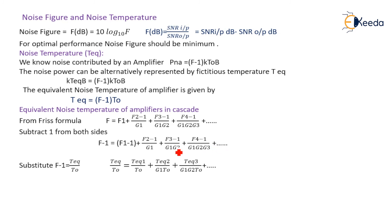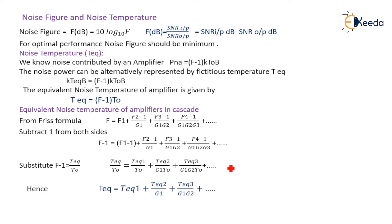Now substituting F − 1 = T_equivalent / T0, we get: T_equivalent / T0 = T_equivalent1 / T0 + T_equivalent2 / (G1 × T0) + T_equivalent3 / (G1 × G2 × T0) + and so on. Hence, T_equivalent = T_equivalent1 + T_equivalent2 / G1 + T_equivalent3 / (G1 × G2), which is the expression for the equivalent noise temperature of amplifiers connected in cascade. Thank you.